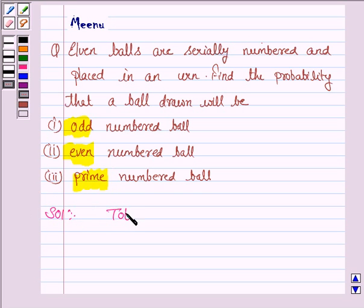We are given that the total number of balls is 11. Now we have to find a probability that ball drawn will be an odd numbered ball.